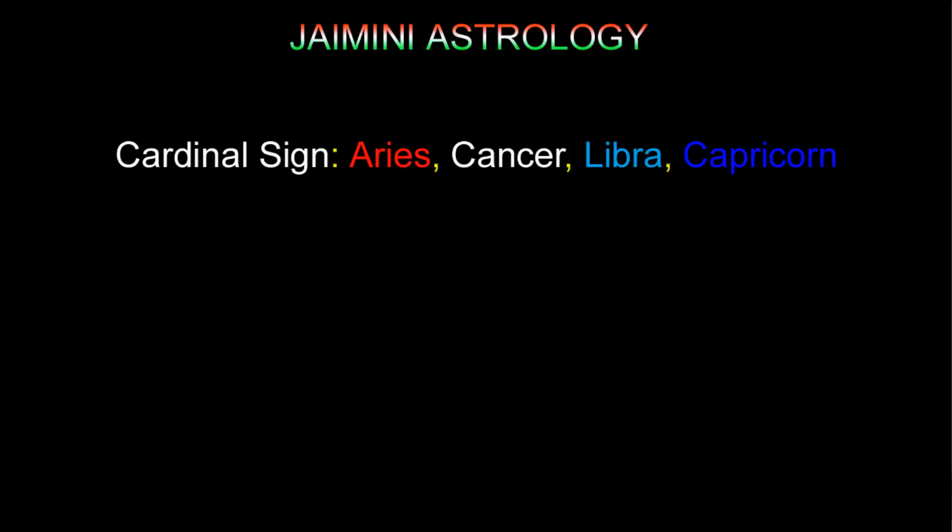The basic idea you need to know in Jaimini astrology is the difference between cardinal, fixed, and mutable signs — what they are and what they do. Just like the elements fire, water, earth, and air, there are three groups. The cardinal signs are the pillar signs — goal-oriented, providing stability and grounding in your chart. These are the original kendra signs: Aries, Cancer, Libra, and Capricorn.